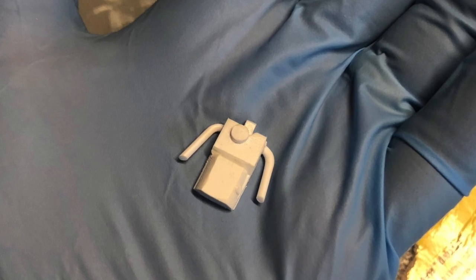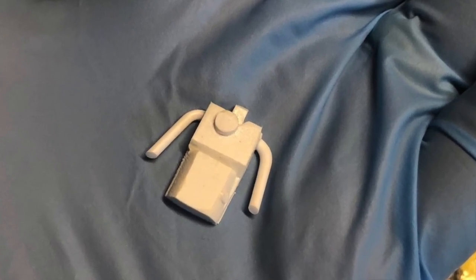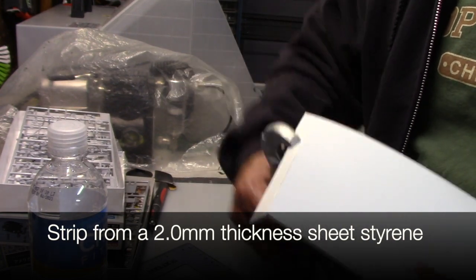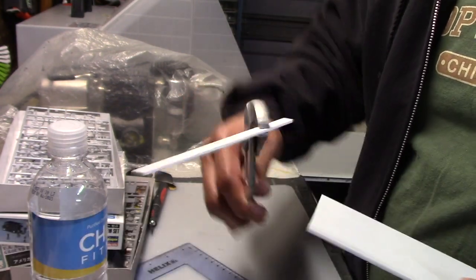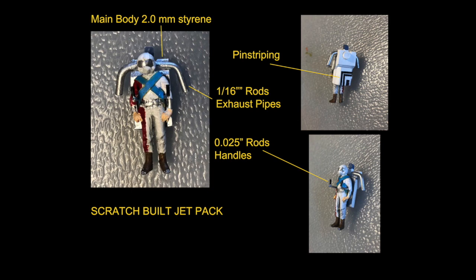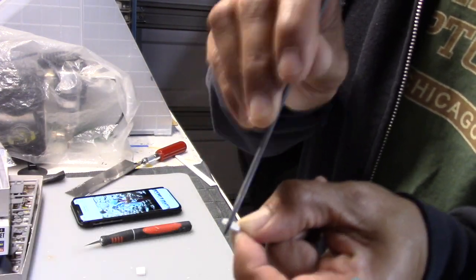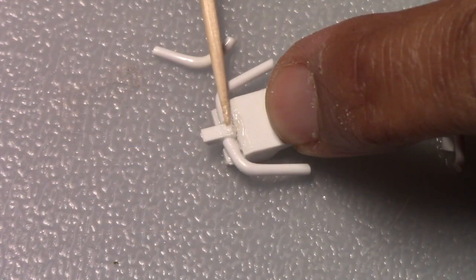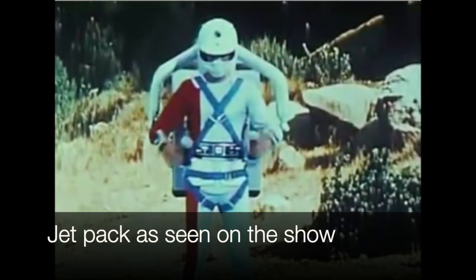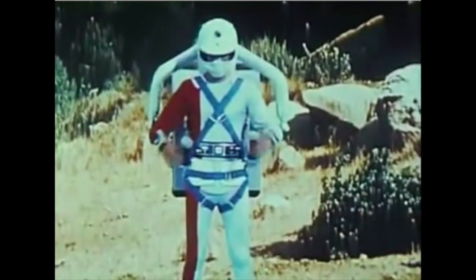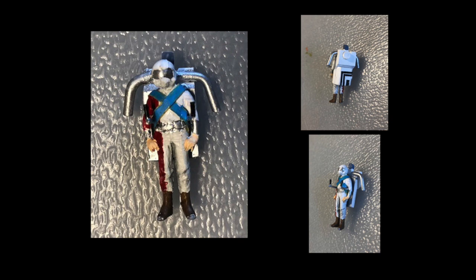So I did want to design a jet pack for our captain here. And so this was scratch built first using a strip that I cut off a 2.0 millimeter thickness sheet styrene. And then the rest of it was just made up of a 1/16 inch rod for the exhaust pipes and a 0.025 inch rod for the handles. The pieces were then trimmed, shaped, and cut accordingly. And you can see here the end product. The striping that you see on the back is just some pin striping that I cut down to fit.